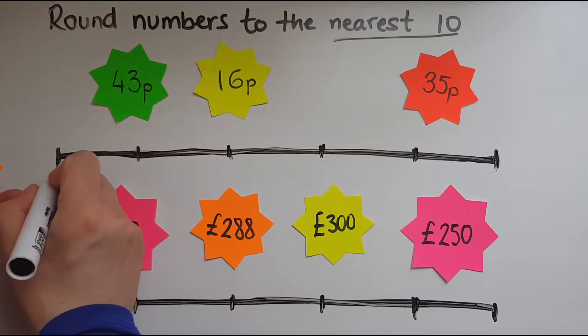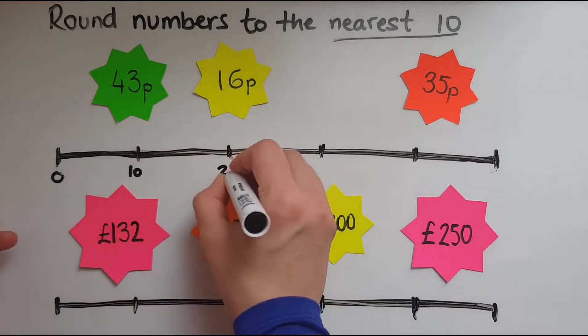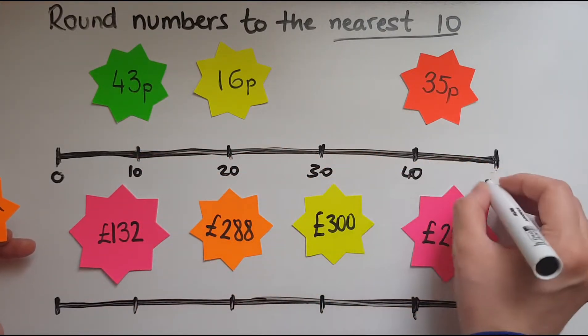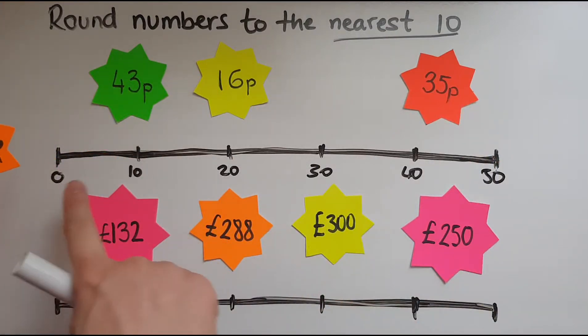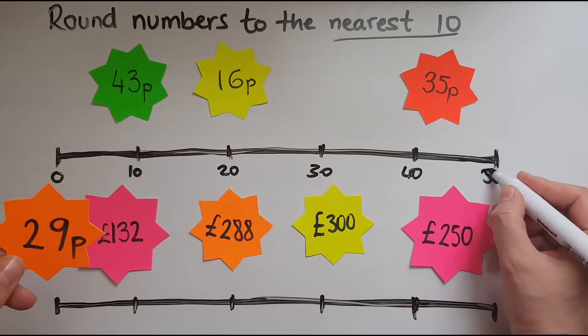So I'll label these divisions in the number line as 0, 10, 20, 30, 40, 50. As it happens these are all pence so we're talking about 0 pence, 10 pence, 20 pence, 30 pence, 40 pence and 50 pence.